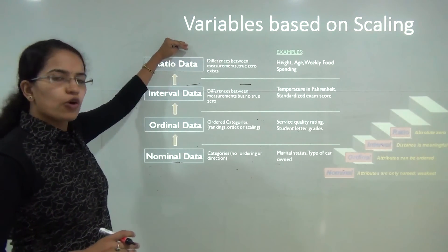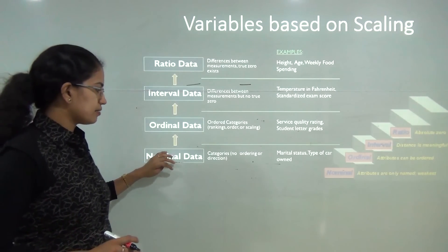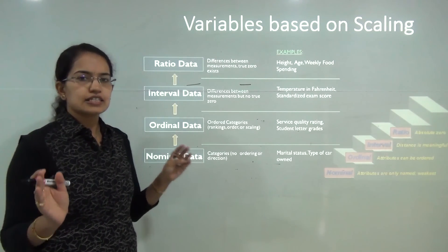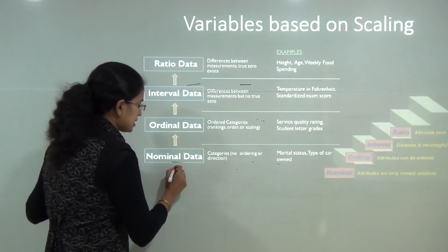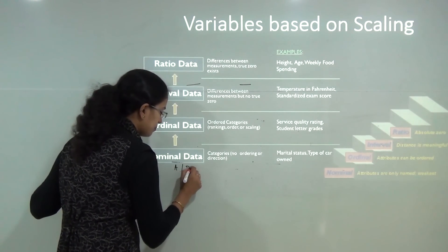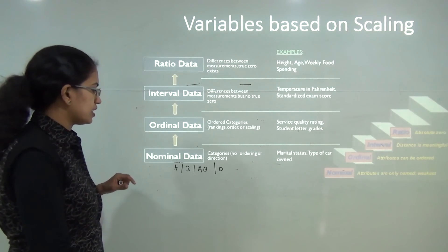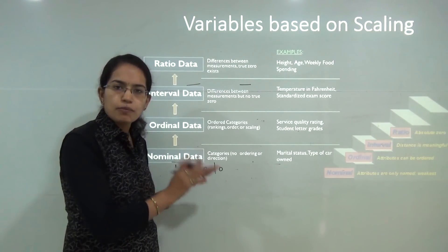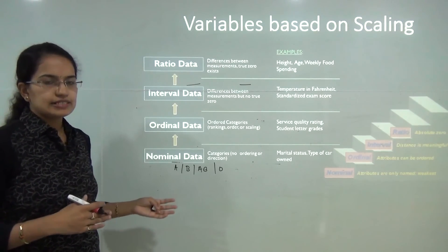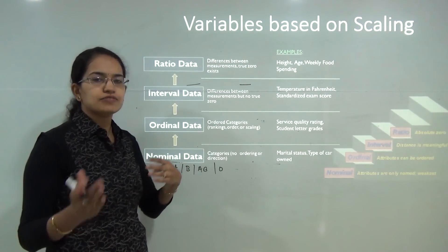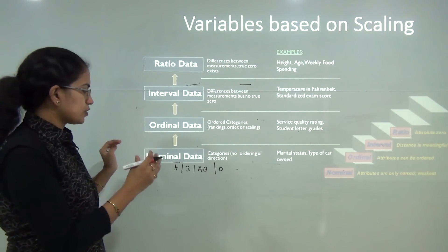Moving on to the four variables based on scaling: nominal variables are categorized into various categories but there is no ordering or direction. For example, blood group A, B, AB, and O — four categories, a kind of nominal data. Similarly, marital status — married or unmarried — or gender: all those are nominal data.